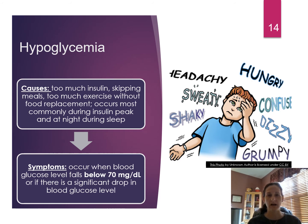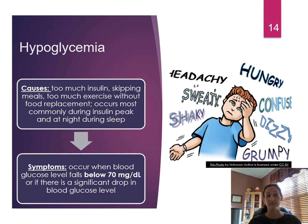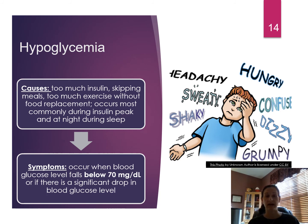Hypoglycemia typically occurs when blood glucose drops below 70 mg/dL. Most patients experience diaphoresis, shaking, dizziness, fatigue, irritability, hunger, and headache. Causes include overcorrection with insulin, skipping a meal, or exercising without having a snack. Hypoglycemia will often occur at night during sleep if the patient didn't have a snack before bed or went to bed with a blood glucose level that was too low.